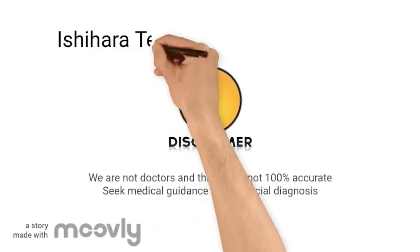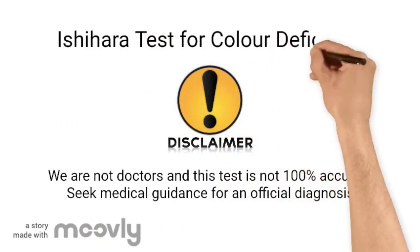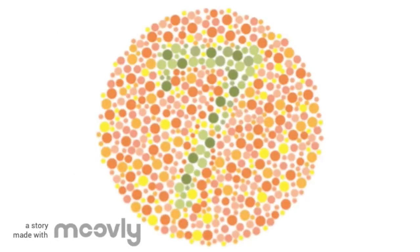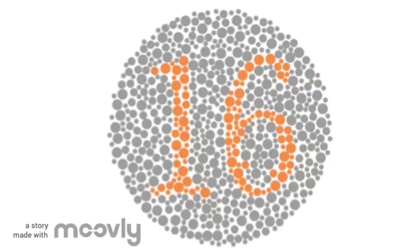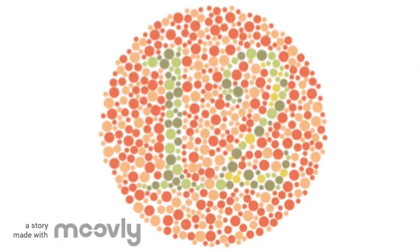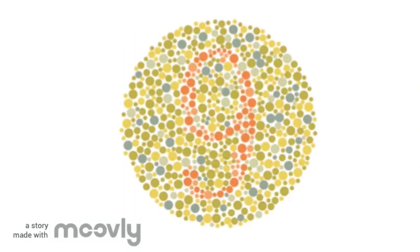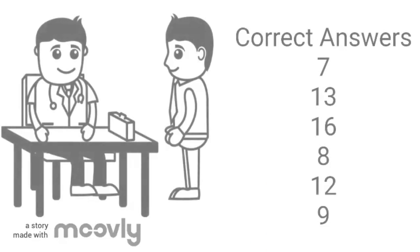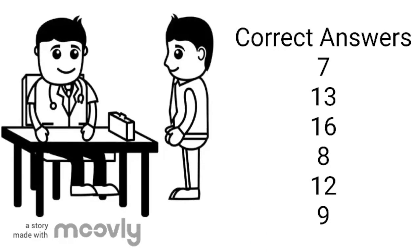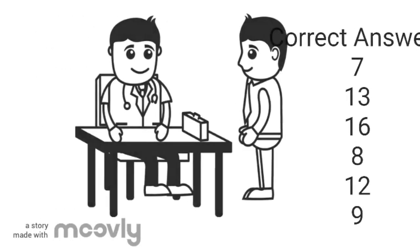This diagnostic test will help determine if you suffer from red-green colorblindness. Can you identify the following numbers? If you had difficulties identifying the numbers, you may be suffering from red-green colorblindness and should consult your local physician. Continue watching this video to learn more about this condition.